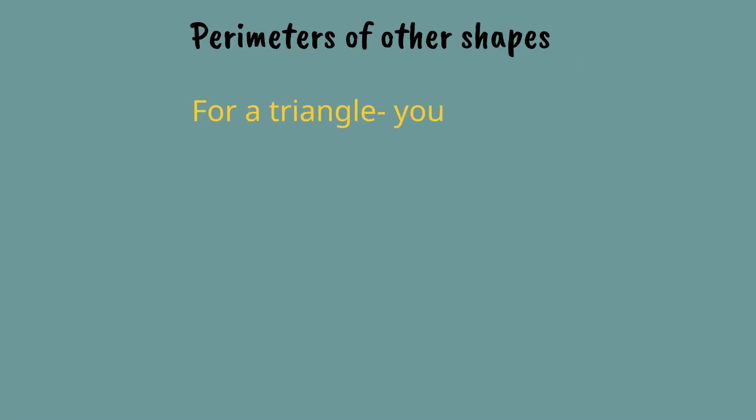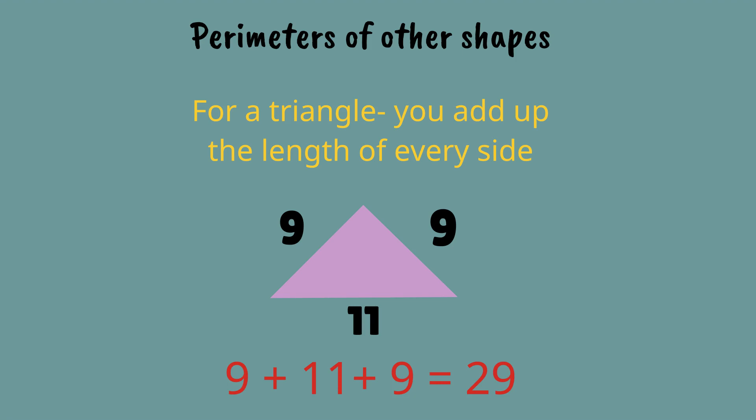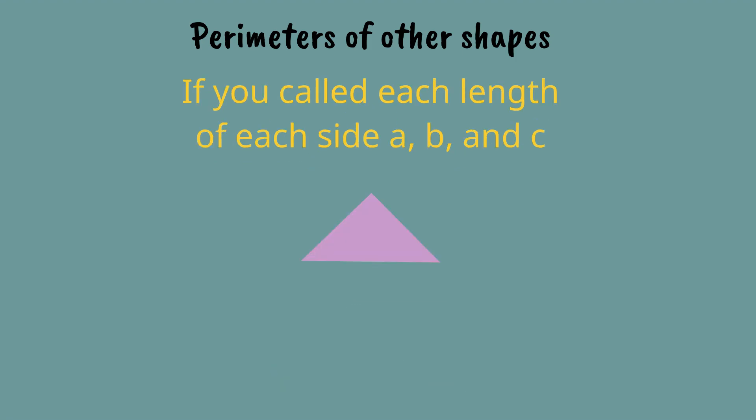What about the perimeter of other shapes? Well, for a triangle you add the length of each side. Here the first side is 9 inches, the next side is 11, and the last side is 9 inches. So 9 plus 11 plus 9 equals 29, and that is a perimeter.